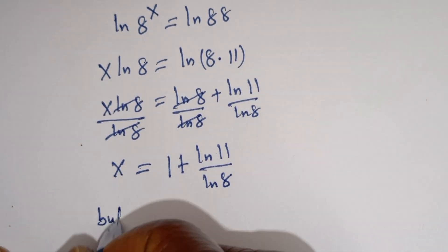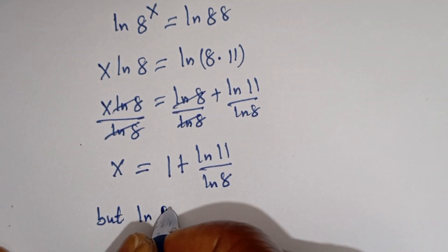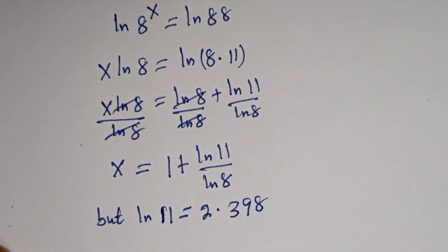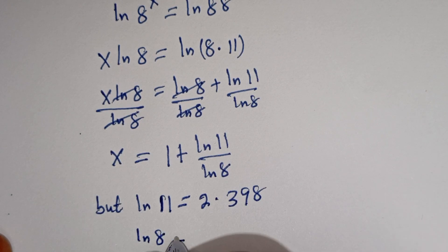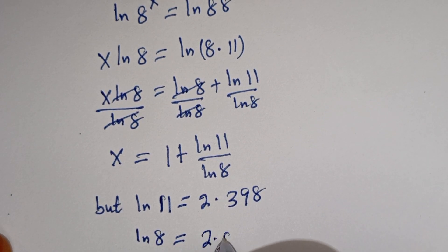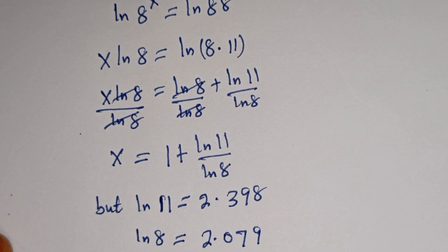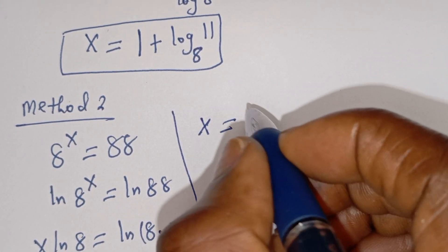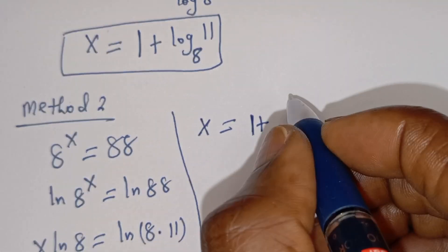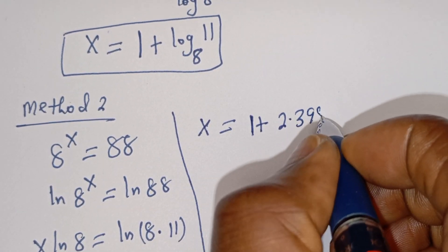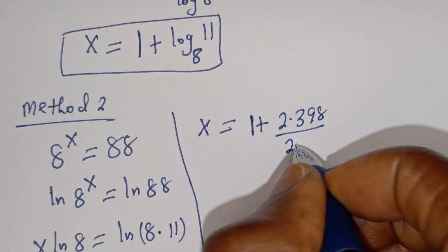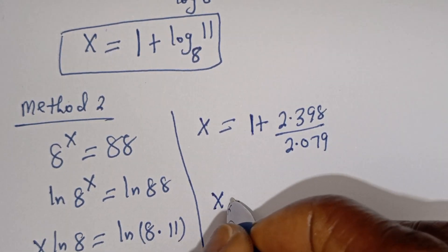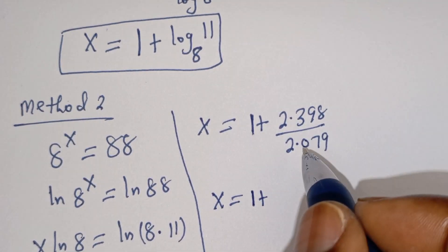Now, ln of 11 is equal to 2.398 and ln of 8 is equal to 2.079. So s will be equal to 1 plus 2.398 divided by 2.079.